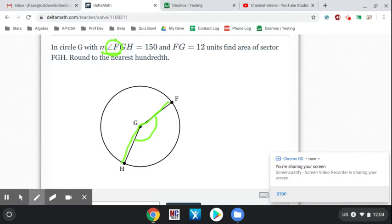So that is 150 degrees. The second piece of information it gives you is the length of FG. FG would be right here, and that is actually a radius of your circle. You can tell that line FG goes from the center to the edge. So that is a radius of the circle.